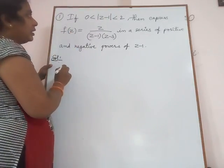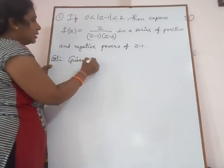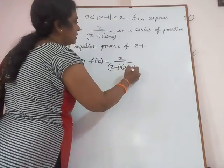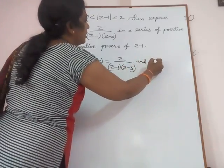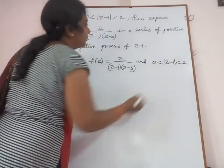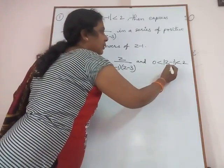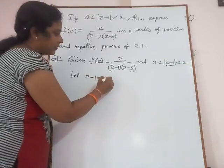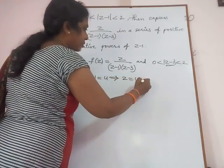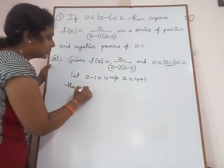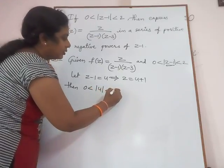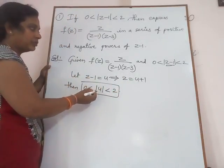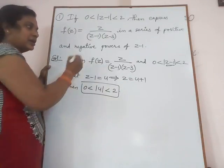Given f(z) = z / ((z-1)(z-3)) and region is 0 < |z-1| < 2. In the previous case we can take only the single variable, but here it is combined with the variable and constant. Let z minus 1 equal to u. From this, z = u + 1, then the region becomes 0 < |u| < 2. The z variable is converted into another complex variable u, and the function is also reduced into that form after simplification.